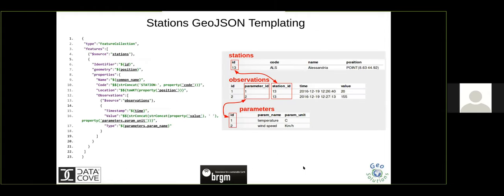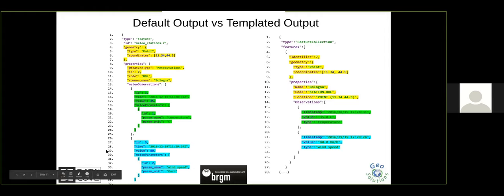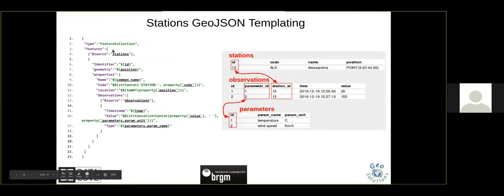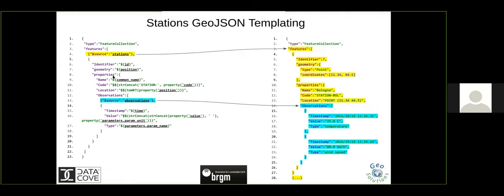Here is how it's done. We define a template by taking our desired output format and replacing values with references to the properties we want to obtain. Our domain model has stations, observations, and parameters. The station has an ID, code, name, and position. The idea of this slide is to show that you reference attributes of your domain model.